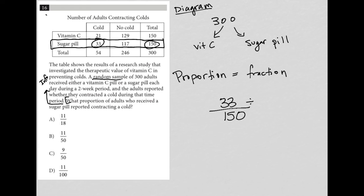Both 33 and 150 are divisible by 3, right? So I can use 3 to reduce the fraction. 33 divided by 3 is equal to 11, and 150 divided by 3 is equal to 50. And therefore, the correct answer here is choice B.